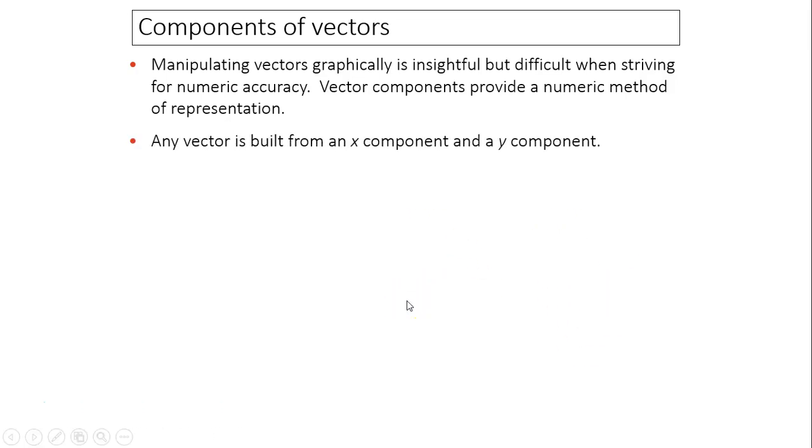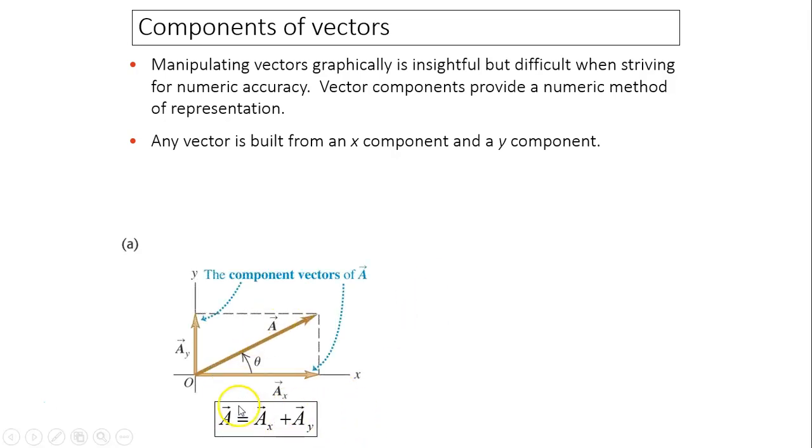Any vector is built from x components and y components. If I have vector Ax and vector Ay, I can build a vector A. A is Ax plus Ay.